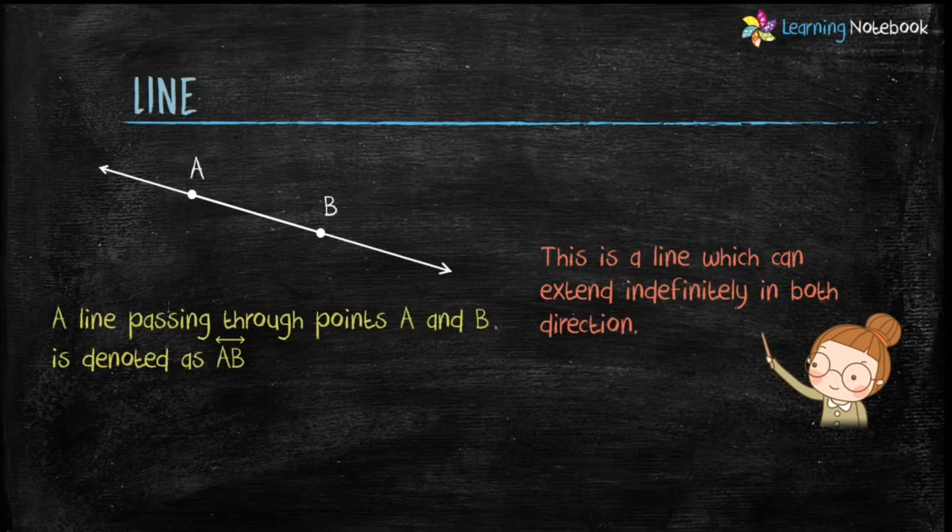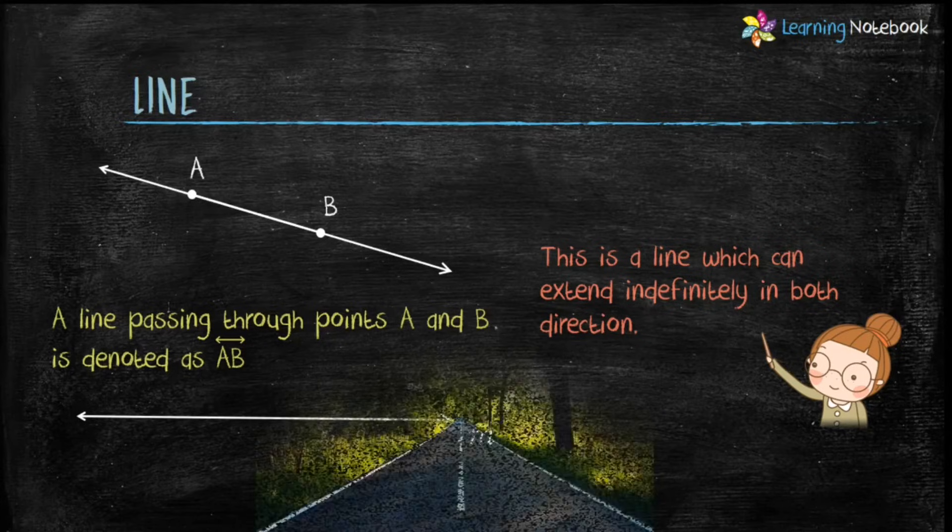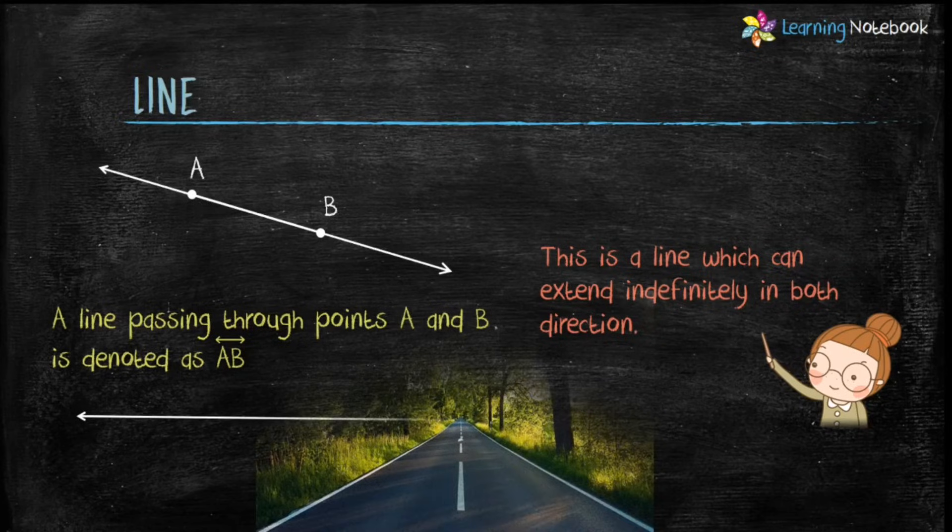Students, you can see that this line is passing through points A and B. Therefore, it can be denoted as AB with a small line on it. The line can also be denoted by small l or small m. An example of a line is a road which can be extended on both sides.